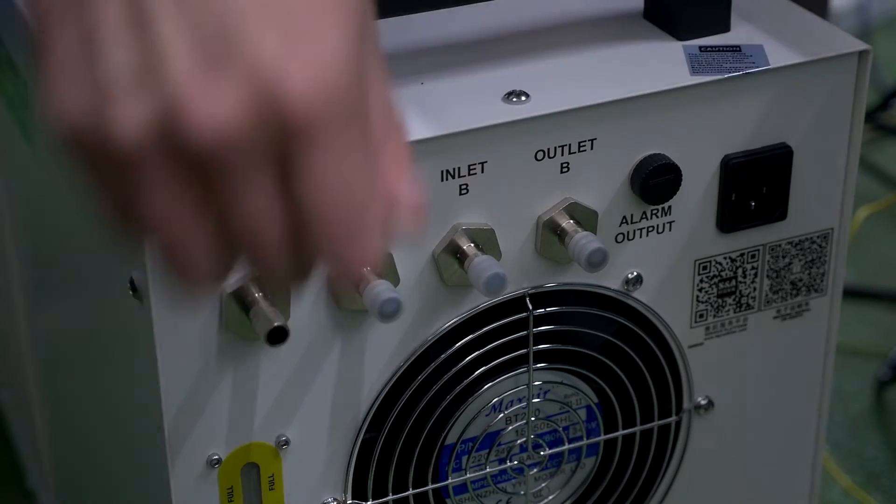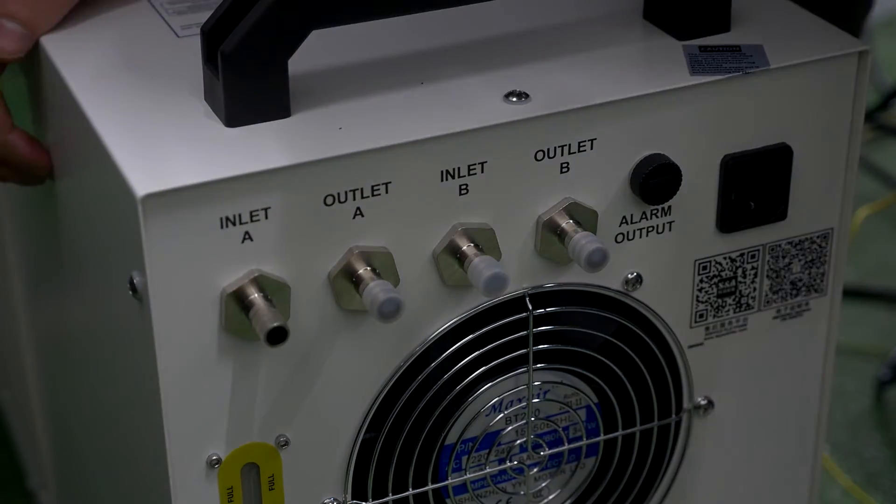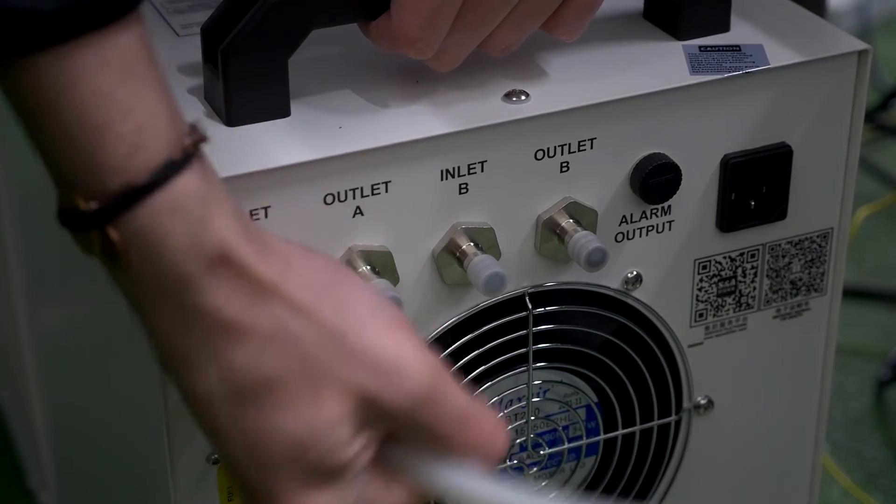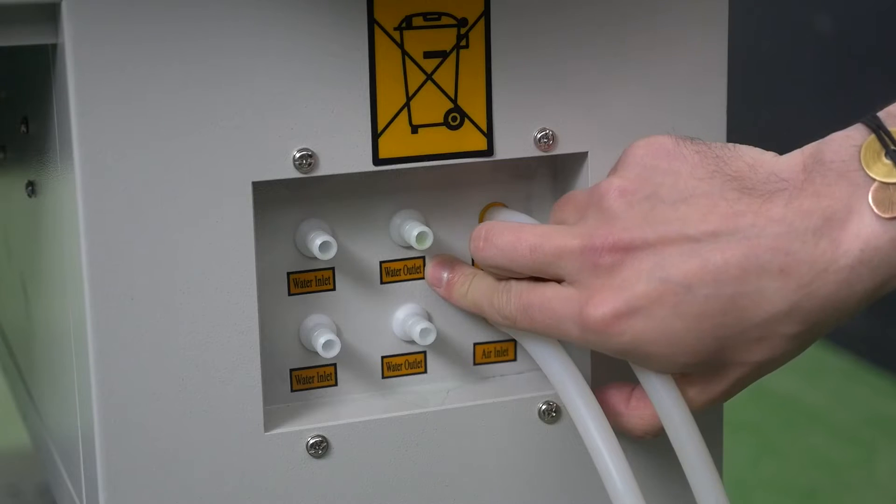Remove protective caps from the fittings at the back of the chiller. Connect a silicon pipe from the machine's set to each fitting. Place the chiller at the back left of the machine.